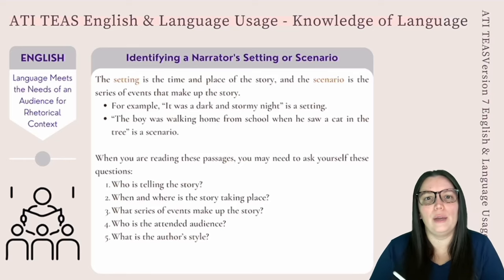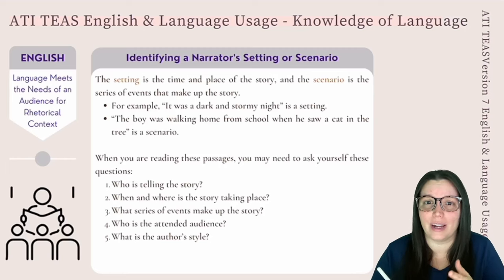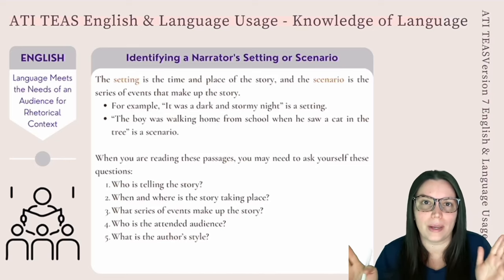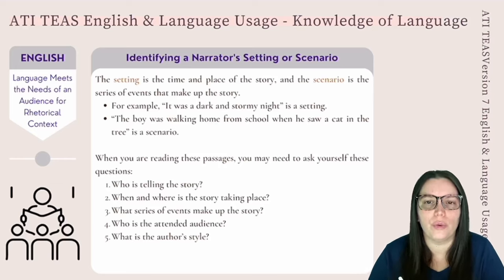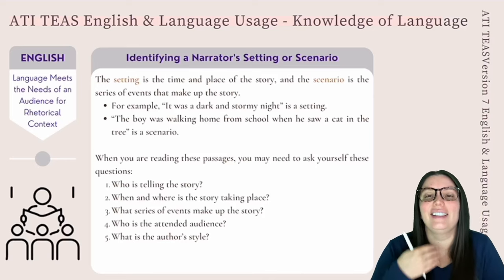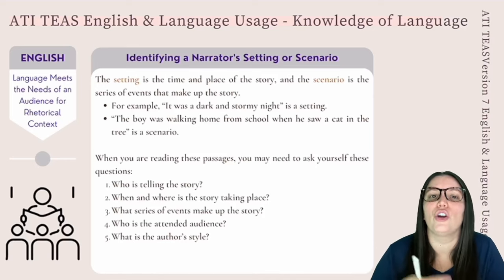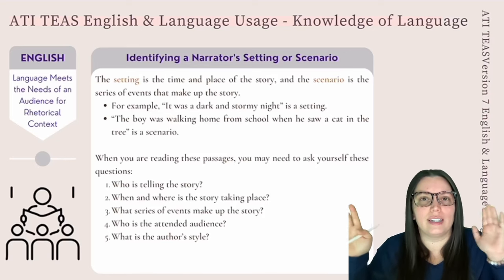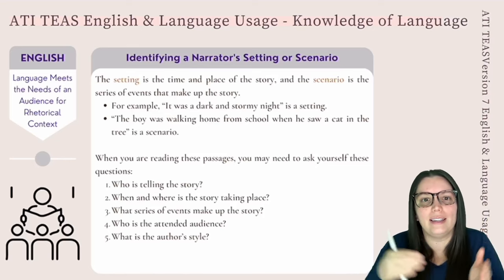When you're reading a text, it's really important to identify the narrator's setting or scenario. The setting is the time and place that the story is taking place, and the scenario is a series of events that make up the story. For example, it was a dark and stormy night — that's a setting, it's laying the groundwork of what is happening in the story. The boy was walking home from school when he saw a cat in the tree — this is the scenario, the series of events making up the story. When reading passages, ask yourself: who is telling the story, when and where is it taking place, what events make it up, who is the intended audience, and what is the author's overall style?